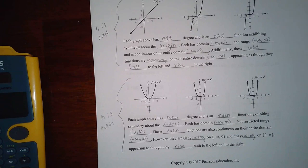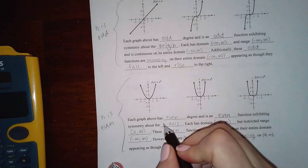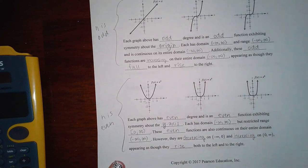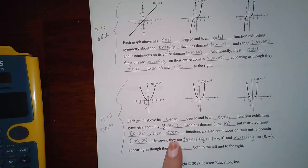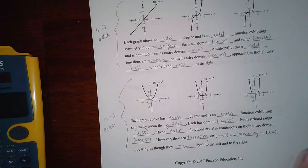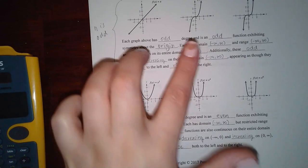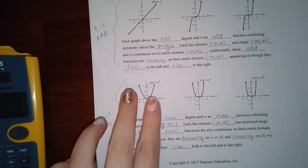Okay, now it says each graph has even degree and is an even function exhibiting symmetry about the y-axis. Each has a domain negative infinity to infinity but restricted range zero to infinity because they only go down to zero and then up to infinity. And even functions are also continuous on their entire domain. However, they are decreasing on the first half and then increasing on the second half. And it appears as though they're rising on both ends. So the both ends are going up.